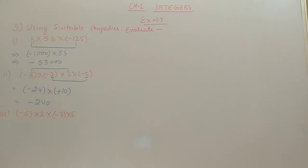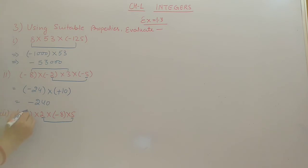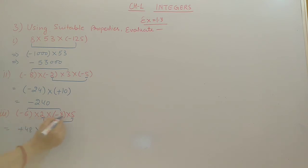Third part: minus 6 into 2 into minus 8 into minus 5. Here also 2 and 5 are present, so multiply them immediately. We multiply minus 6 into minus 8 first, giving plus 48. Then 2 into 5 gives 10. So 48 into 10 gives 480.